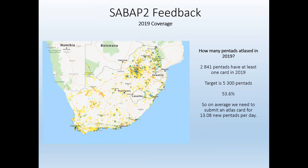SubAve2 aims to monitor changes in bird distribution over time. To do that, we ask atlasers to atlas as many pentads as possible each year. At the beginning of the year we set a target of 5,300 pentads for 2019. We are currently doing extremely well — we've atlased over 2,800 pentads, which is 53% of the target, and we're already 50% through the year, so we're keeping up.